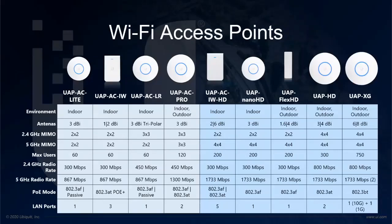A critical part of the wireless infrastructure is of course access points. Unify has a range of dual-band access points supporting anywhere from 60 to 750 concurrent users. Depending on the number of expected users and desired throughput, there's a suitable AP for every environment.